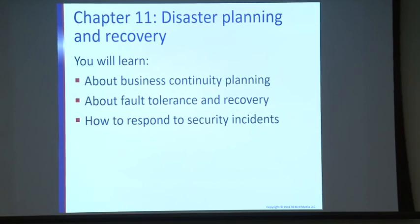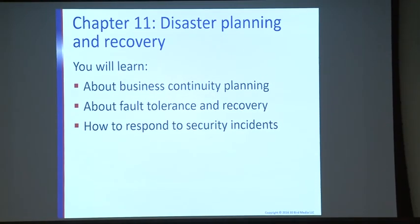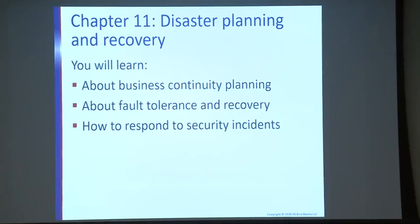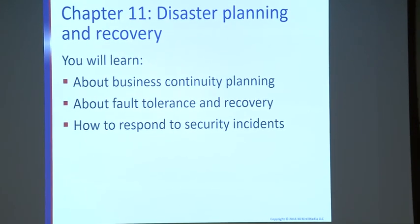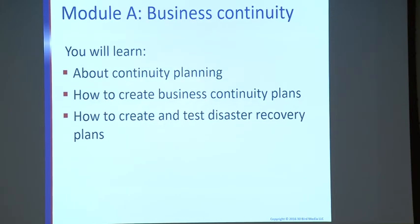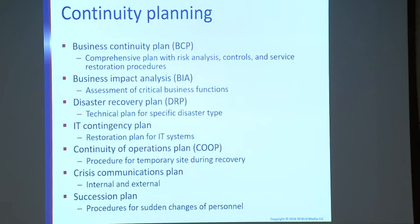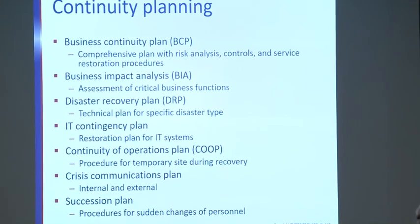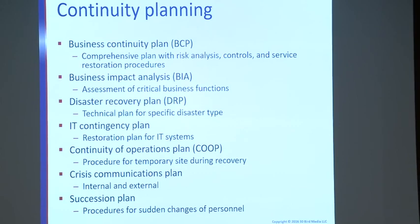Now let's talk about disaster recovery and disaster planning. In this chapter we'll look at business continuity planning, disaster recovery plans, fault tolerance and recovery, and how to respond to a security incident. Beginning with business continuity: the business impact analysis should come before the business continuity plan. You need the BIA first. The BIA assesses critical business functions — what is critical in each department.